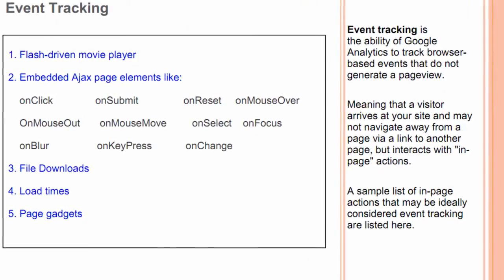Event tracking is the ability of Google Analytics to track browser-based events that do not generate a page view, meaning that a visitor arrives at your site and may not navigate away from a page via a link to another page, yet interacts with in-page actions. A sample list of in-page actions that may be ideally considered for event tracking are listed here.